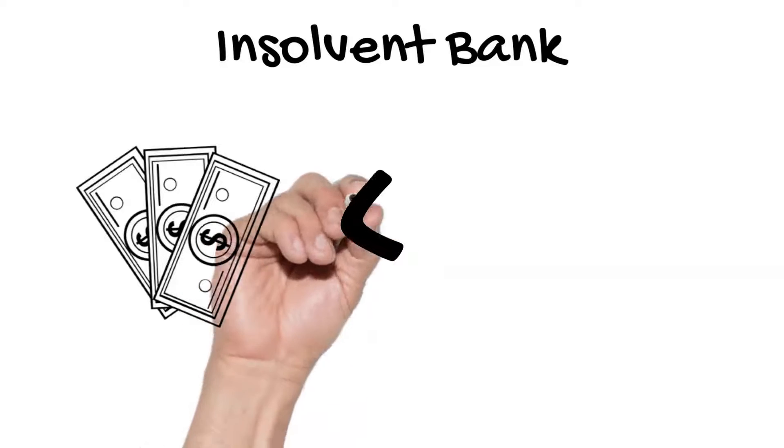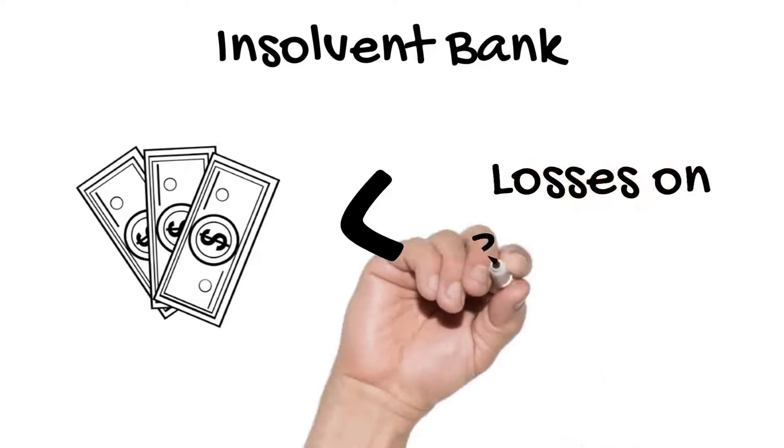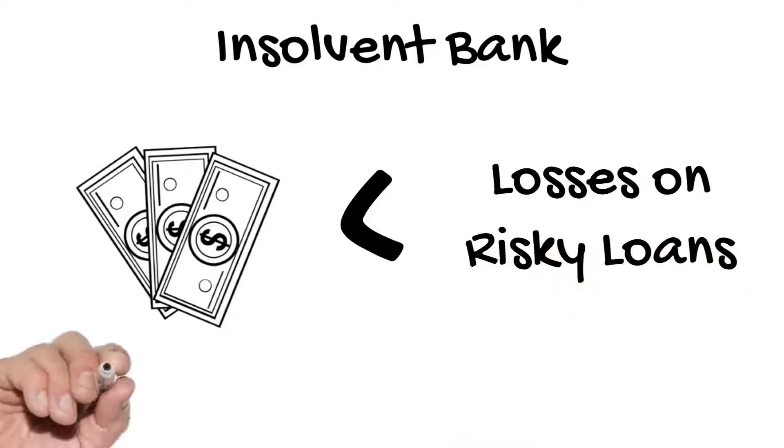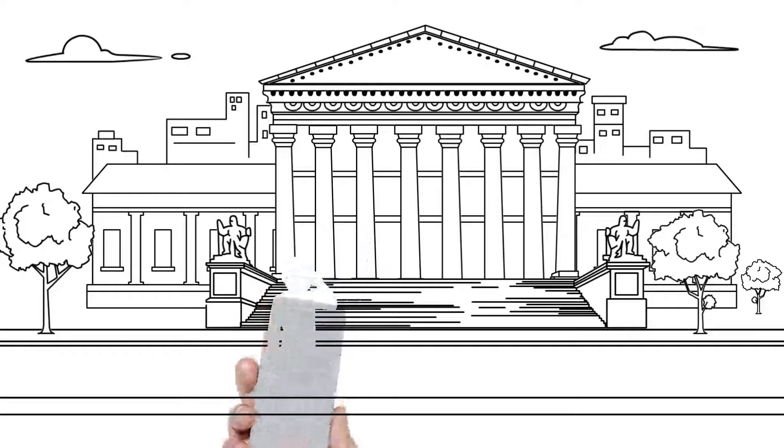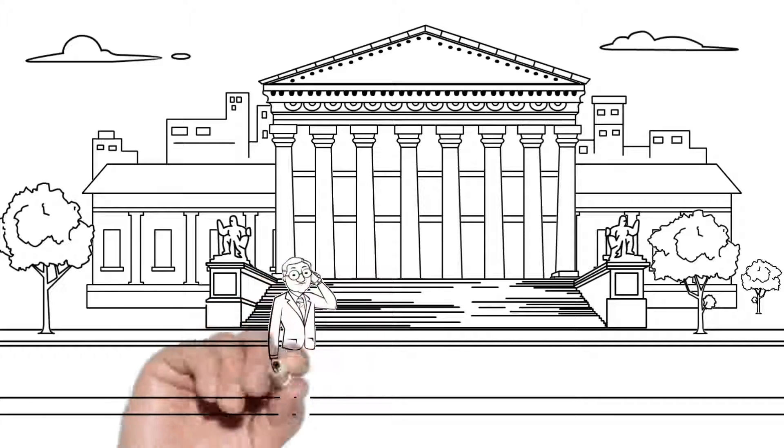This means the bank's capital is smaller than the losses on risky loans. In this case, a bank's capital is too small to protect all of the money it owes to depositors and investors. It's the financial regulator's job to ensure a bank holds enough capital.